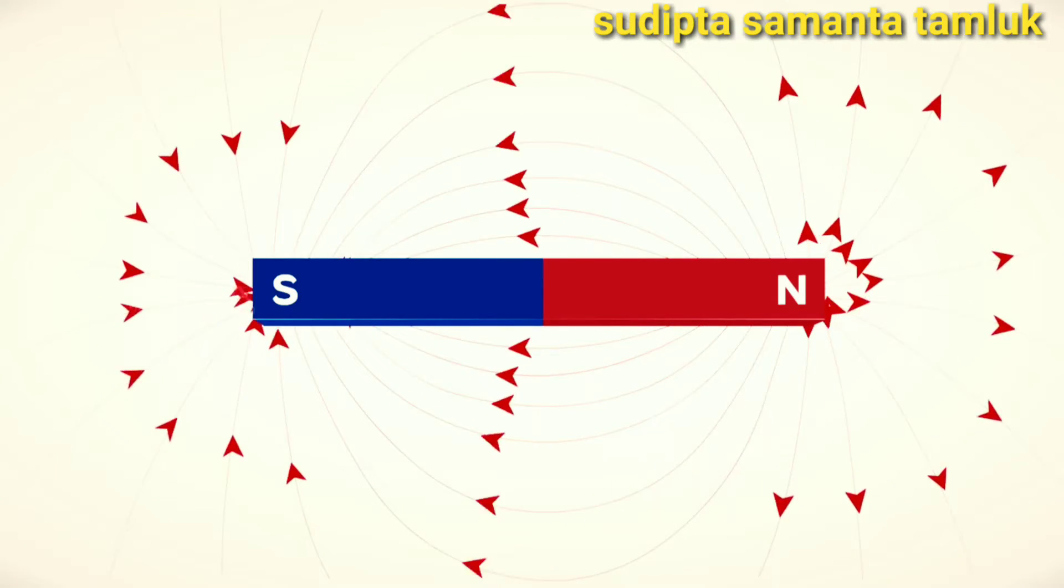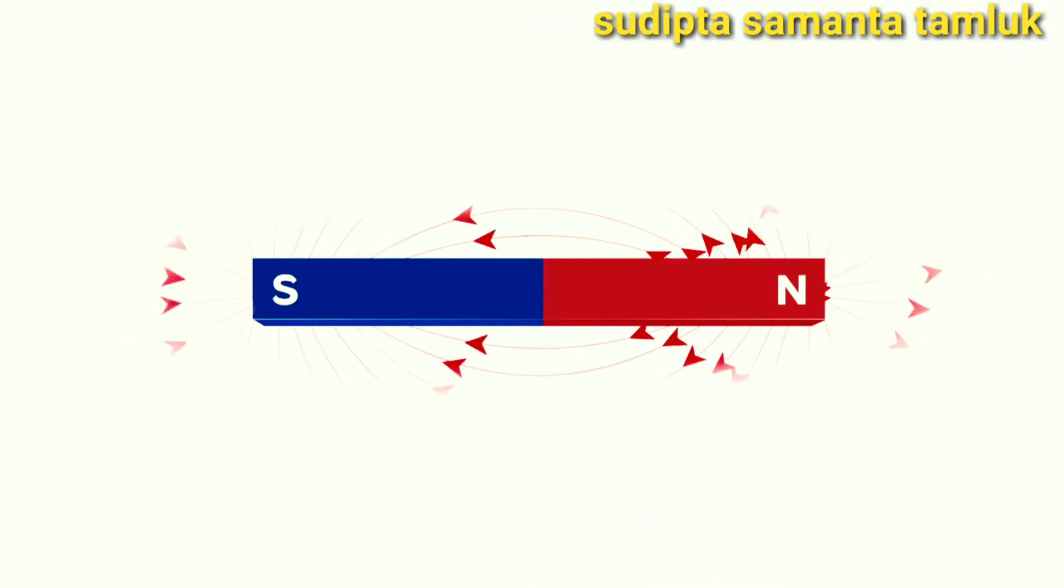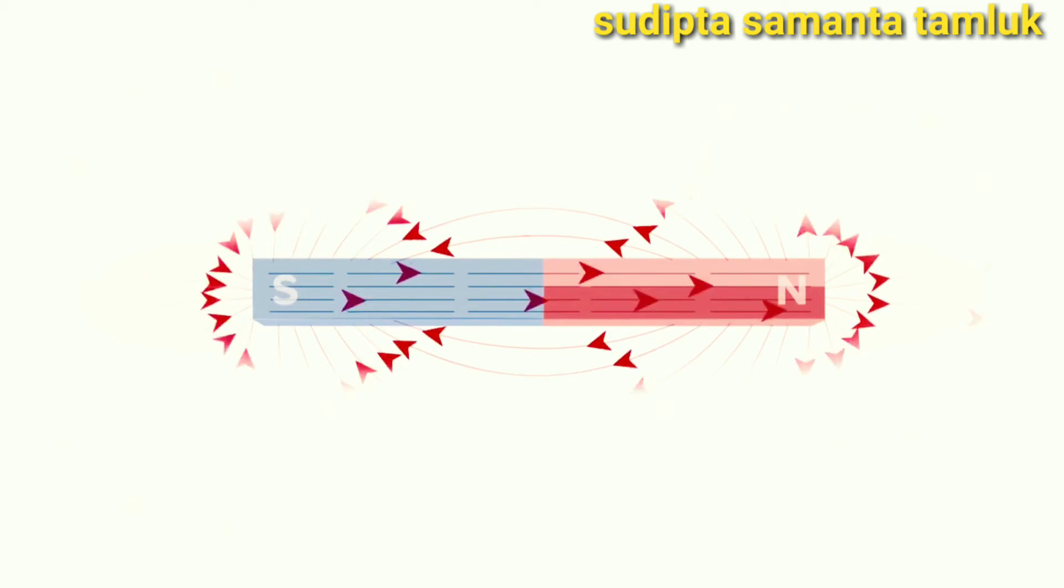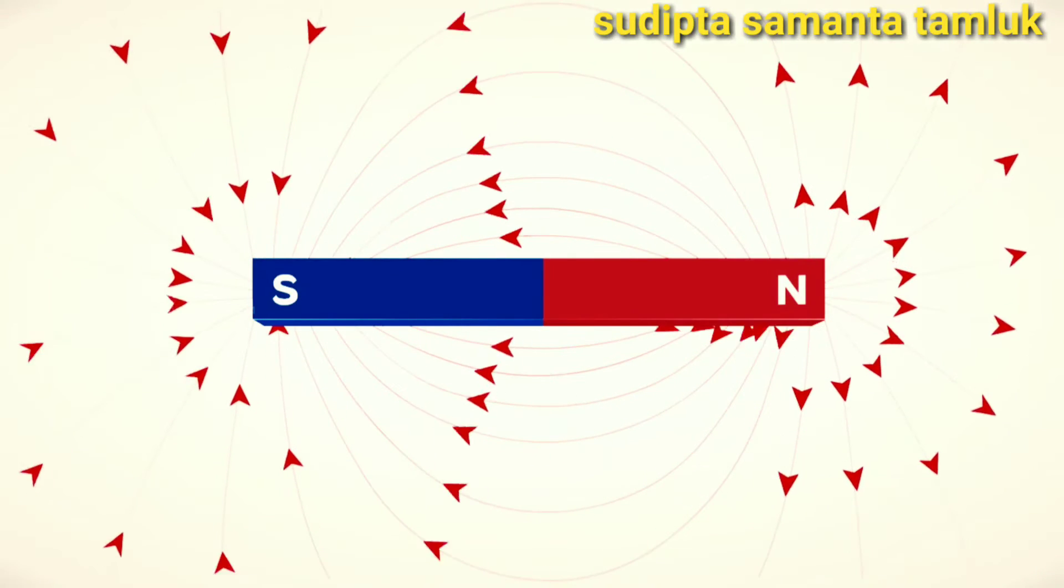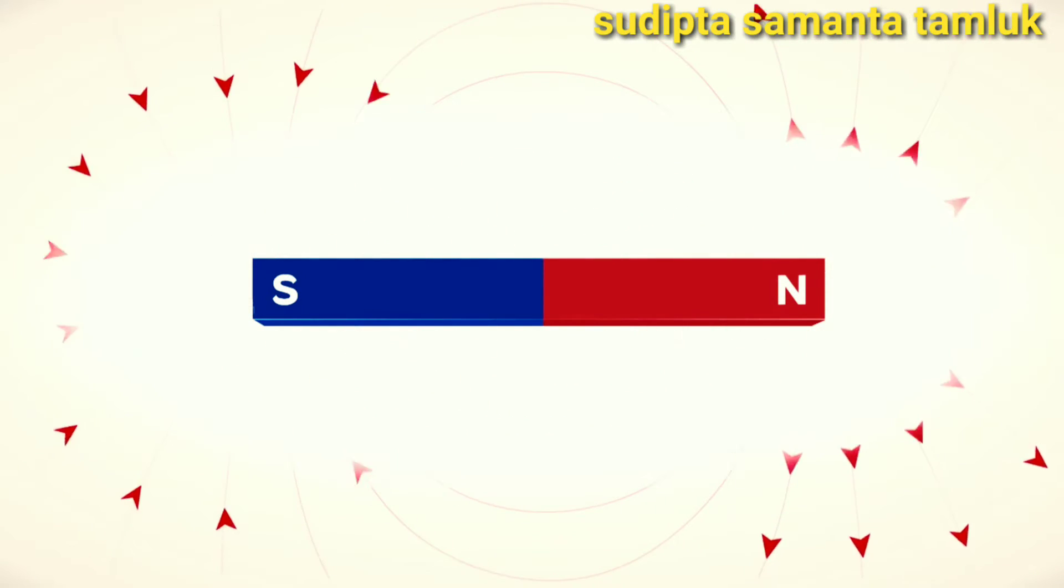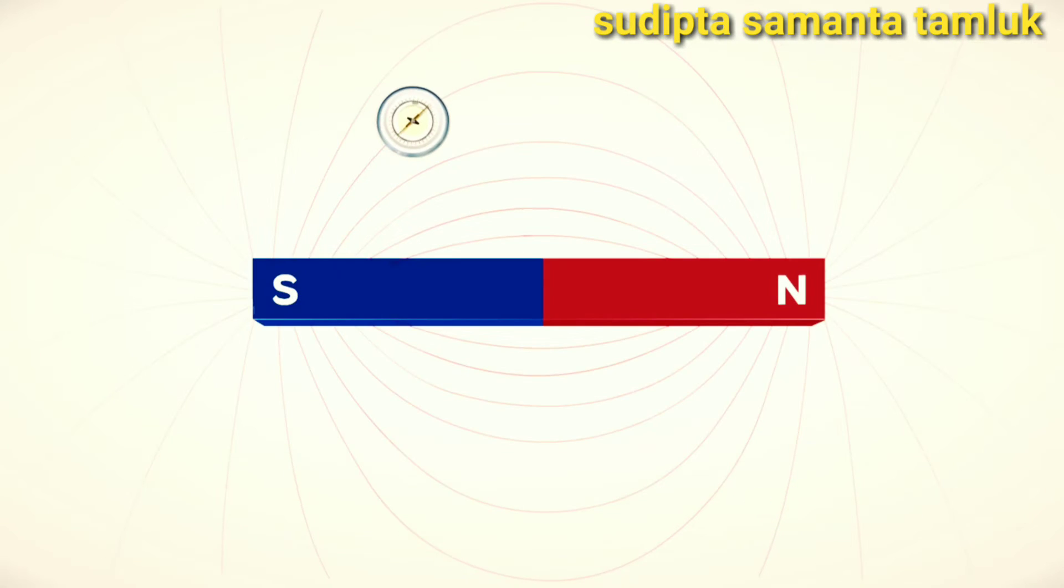If the magnetic field lines are very close to each other in a particular region, the strength of the magnetic field in that region is very large. If the magnetic field lines are far from each other in a particular region, the strength of the magnetic field in that region is very small. The tangent at any point gives the direction of intensity of the magnetic field.